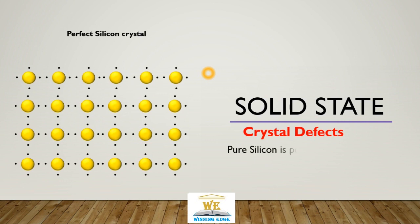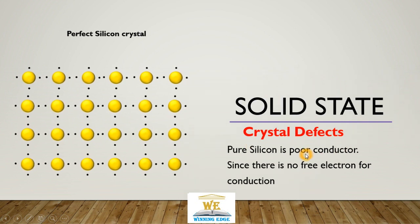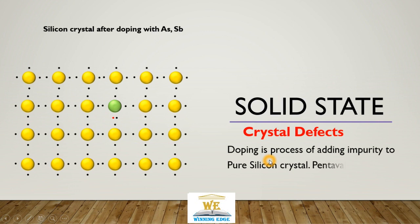Under crystal defects, consider the perfect silicon crystal. Silicon has 4 valence electrons, so it forms tetrahedral bonding. It is a very poor conductor of electricity because it has no free electrons — all silicon atoms are covalently bonded. But when we introduce an impurity such as arsenic or antimony, this process is known as doping. Arsenic belongs to the nitrogen family and has 5 valence electrons (pentavalent).